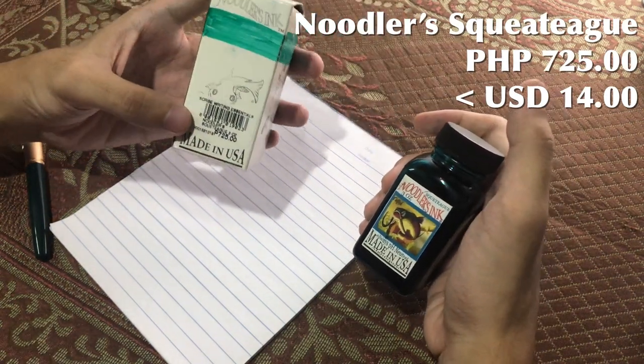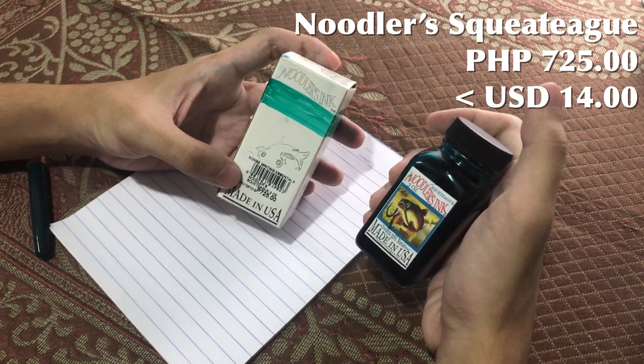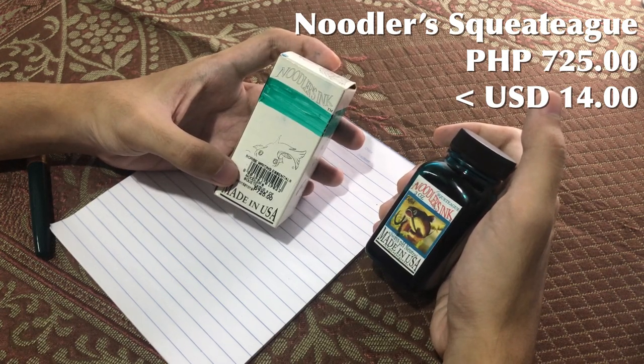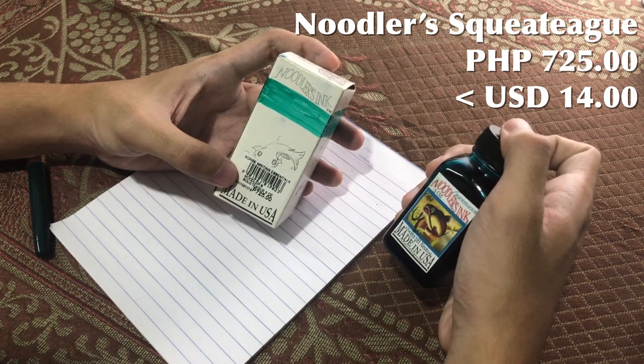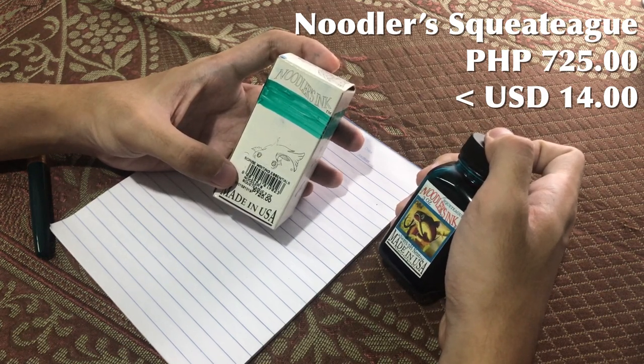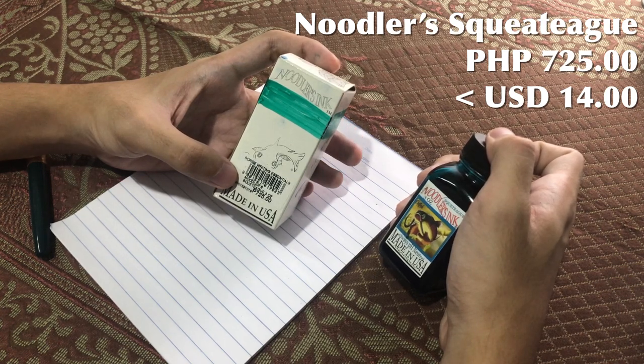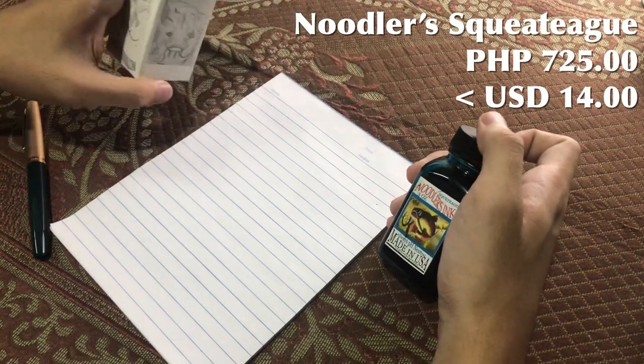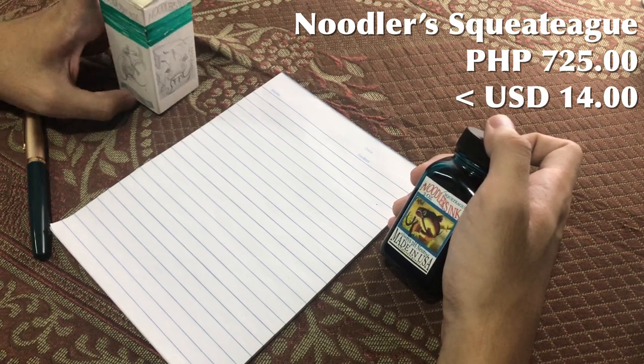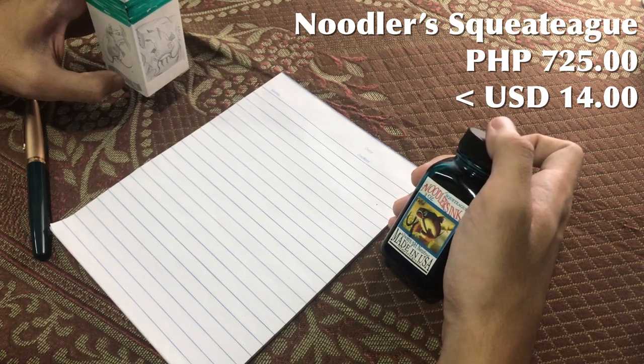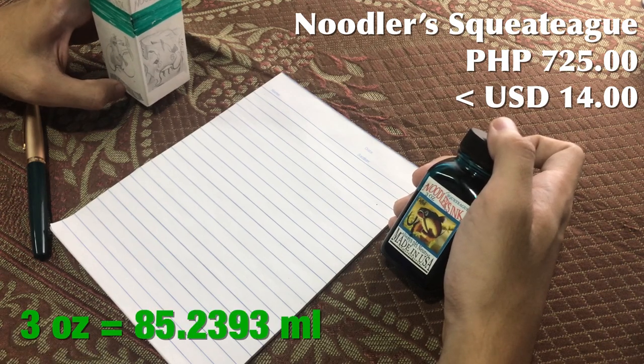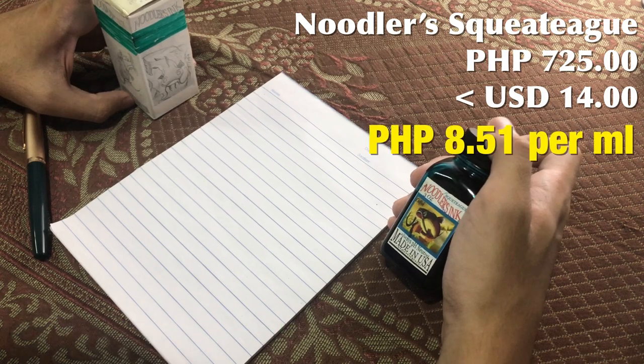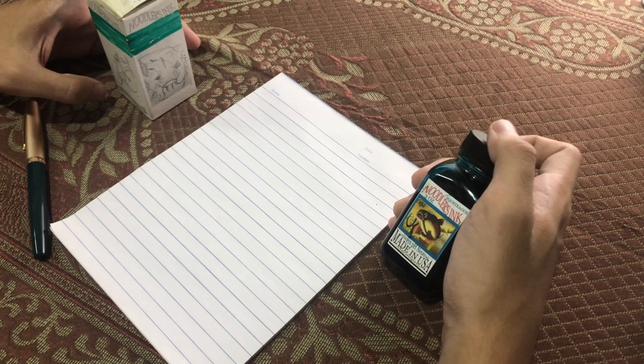I have read validated claims online that fountain pens did increase in price recently, possibly due to inflation or the TRAIN law. 725 for a 3-ounce bottle - it's not cheap, but it's roughly a few milliliters less than 90ml. With that kind of volume and price, it's going to be 8 pesos per milliliter, so it's kind of a bang for the buck.